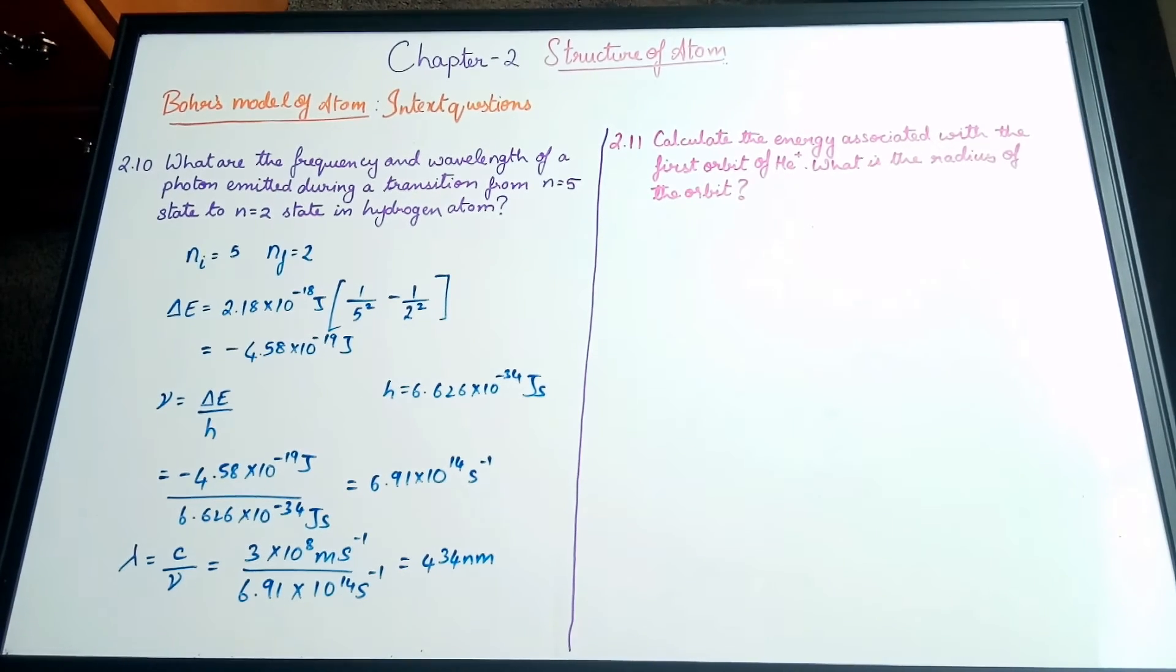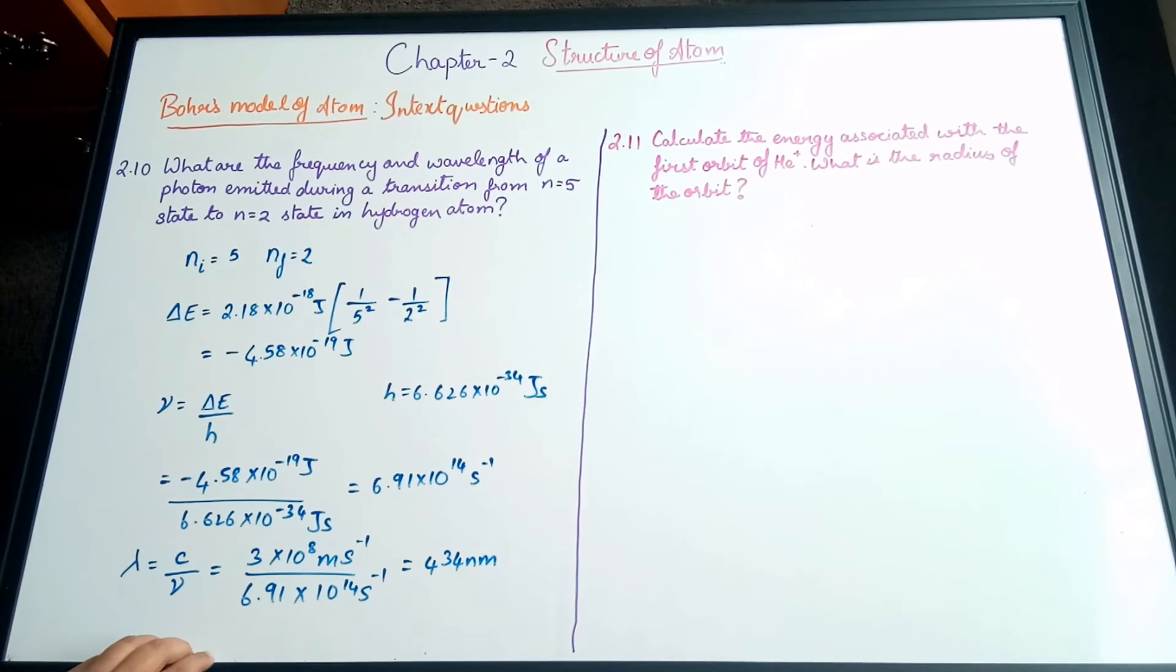From the ΔE equation discussed in the line spectra of hydrogen, we calculated the energy difference of the emitted photon, and from that we calculated the frequency and wavelength. Next question 2.11.